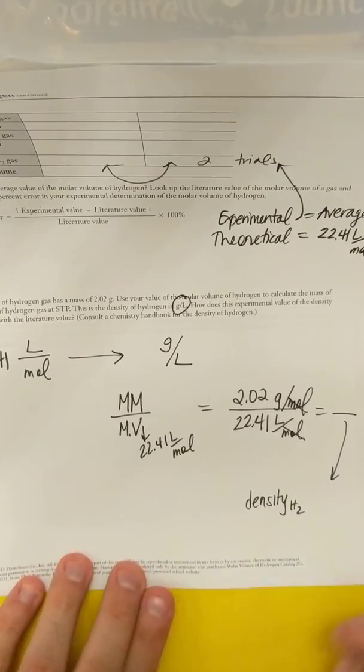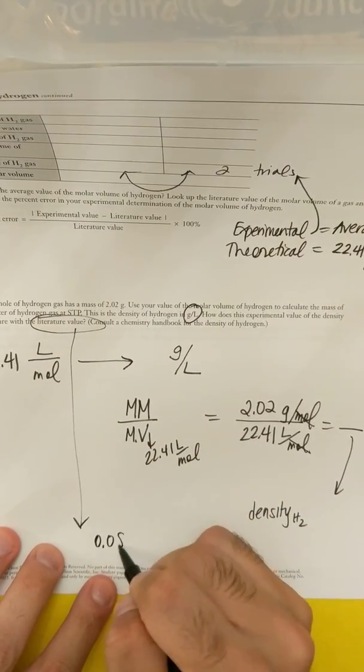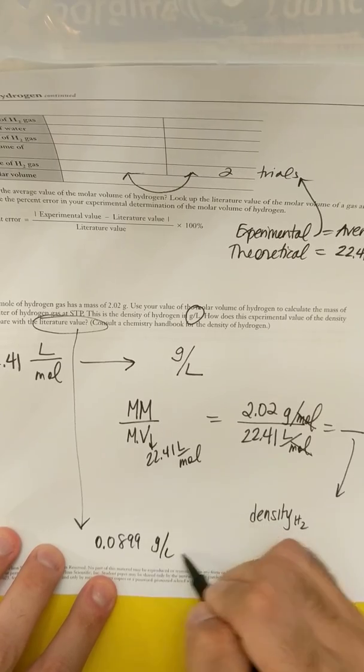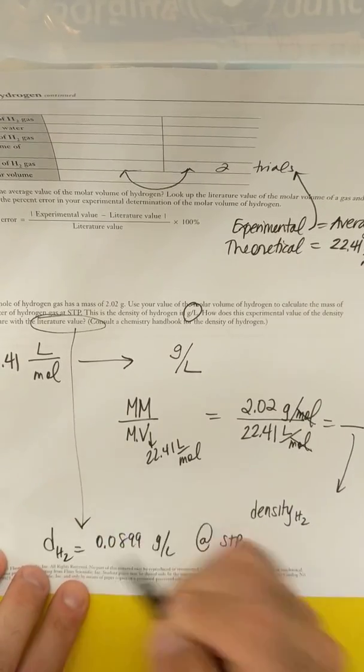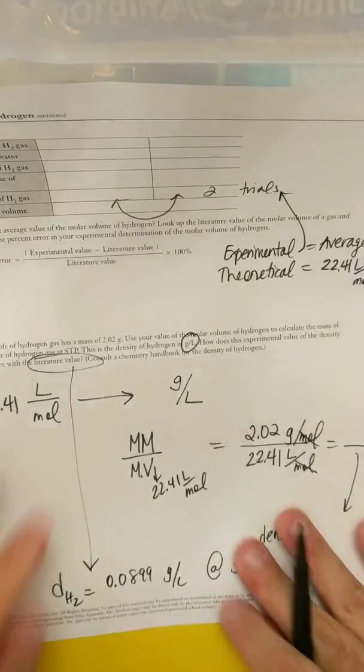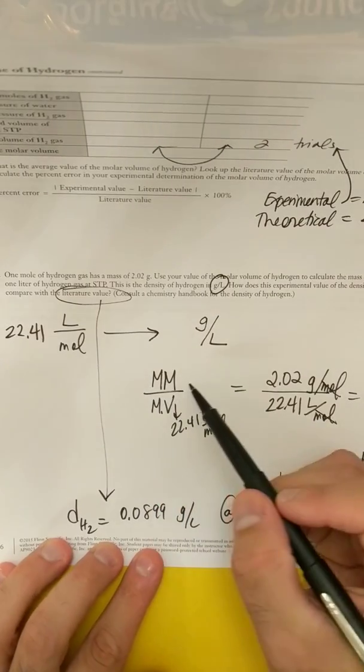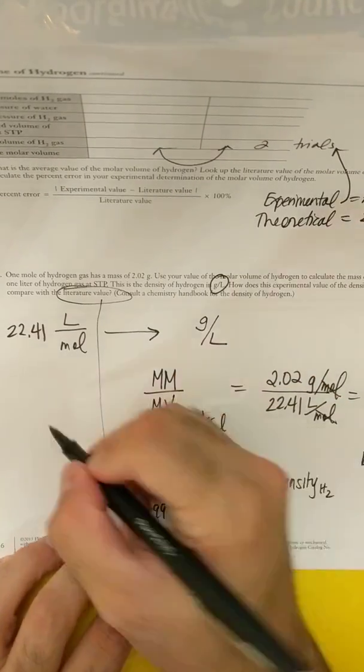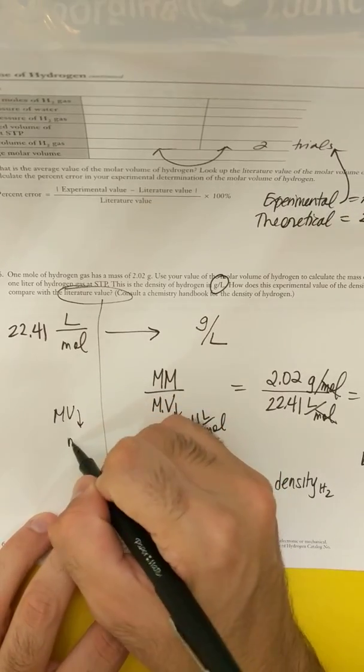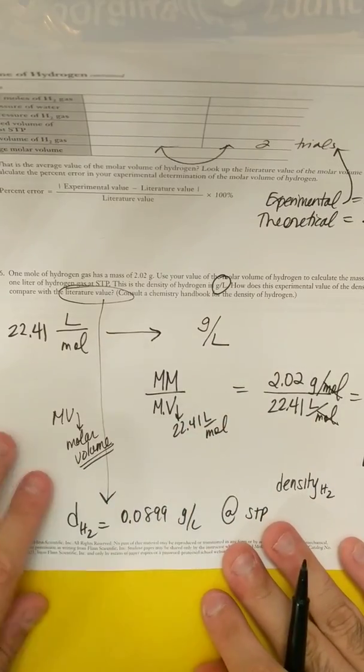And whatever number you get here is your density for hydrogen gas. And theoretically, you should get, it says look it up. Look up the literature value. If you look up the literature value, you should get 0.0899 grams per liter at STP. The density of hydrogen gas is 0.0899 grams per liter at STP. So to repeat, you're going to take the molar mass of hydrogen and divide it by the molar volume. MV stands for molar volume, which is what you were supposed to calculate in this entire experiment.